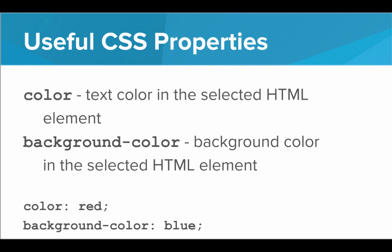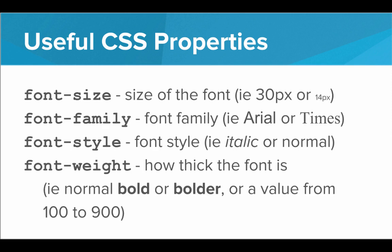What are the CSS properties that we can style? Just like with the style attribute, we can set the color, which specifies the text color for all text in the selected HTML element. We can define the background color, which sets the background color for the selected element. We can set the font size — for example, 30 pixels or 14 pixels. We can set the font family, choosing things like Arial, Times, or Comic Sans. There's font style, with options italic or normal. And we can set the font weight — how thick the font is — with values like normal, bold, bolder, or a number between 100 and 900. Using these CSS properties, we don't really need the I tag for italic or the B tag for bold anymore. We can do all our styling in CSS and leave the HTML focused purely on content.